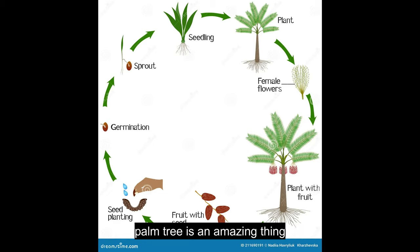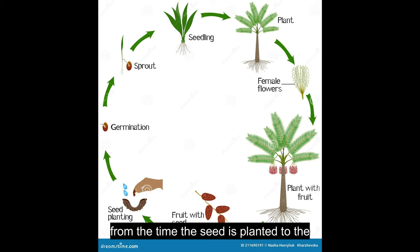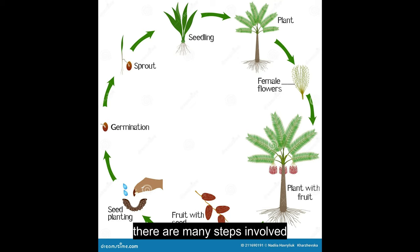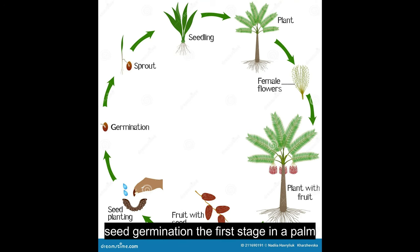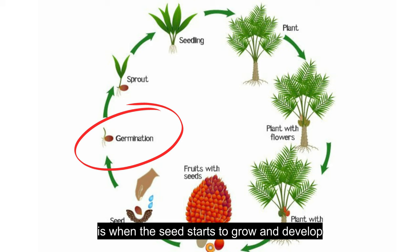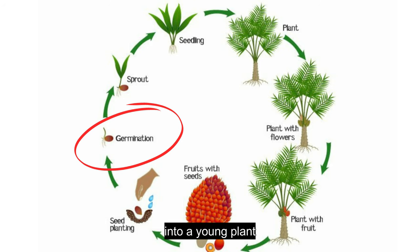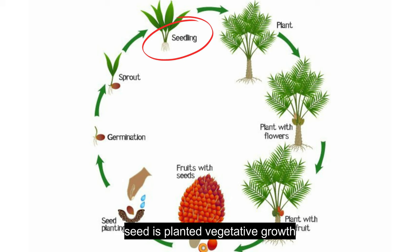The life cycle of a palm tree is an amazing thing. From the time the seed is planted to the time the tree reaches its full height, there are many steps involved. Let's take a look at the different stages of a palm tree's life cycle. Seed germination: the first stage in a palm tree's life cycle is seed germination. This is when the seed starts to grow and develop into a young plant. For most palm trees, this process takes place within two to four weeks after the seed is planted.